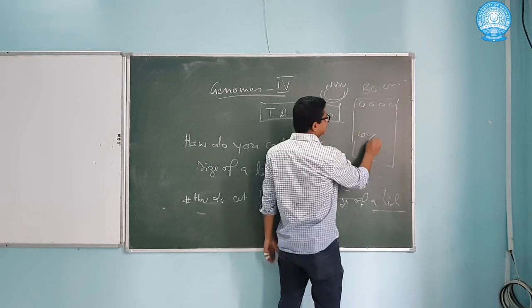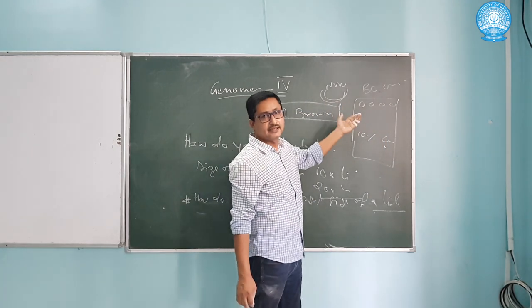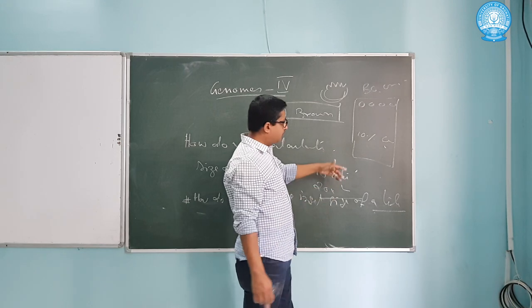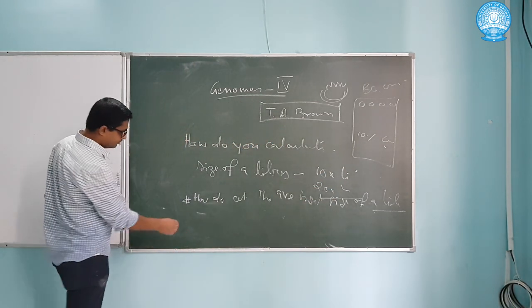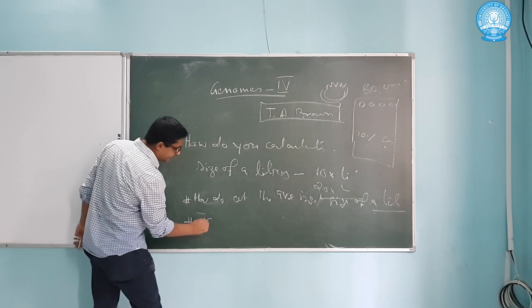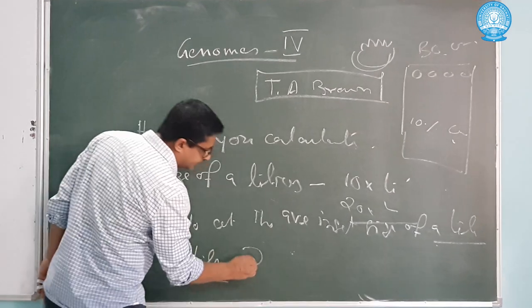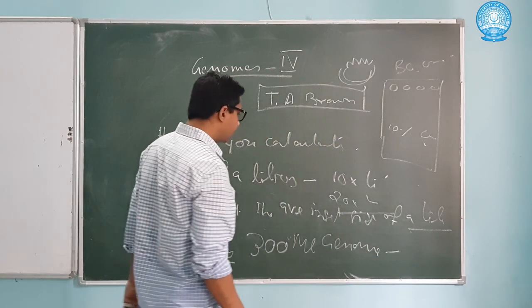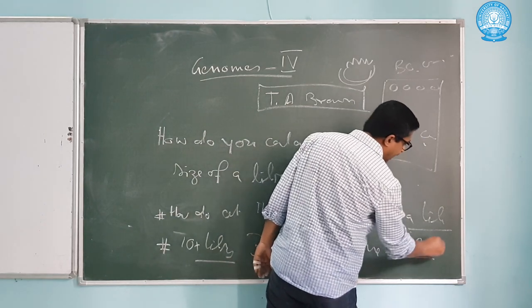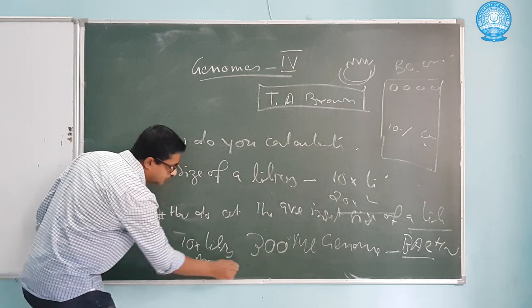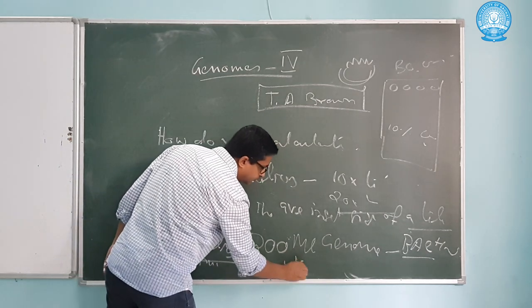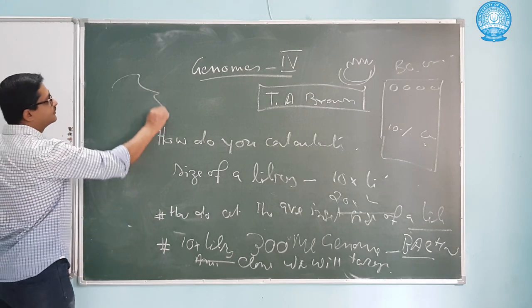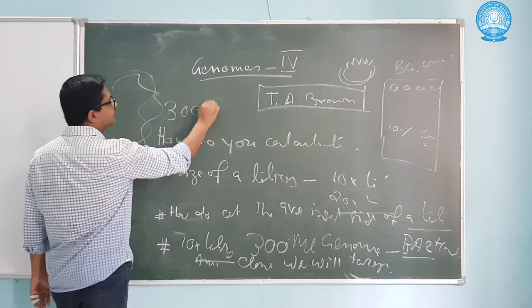What you do, you take 10% of the clones - out of 30,000, 3,000 clones - and isolate plasmid and isolate the insert. And you run a gel. Next class, we will discuss that. We can also calculate for a 10x library of a 300 MB genome. We know, with an average BAC library, how much clones we will target.